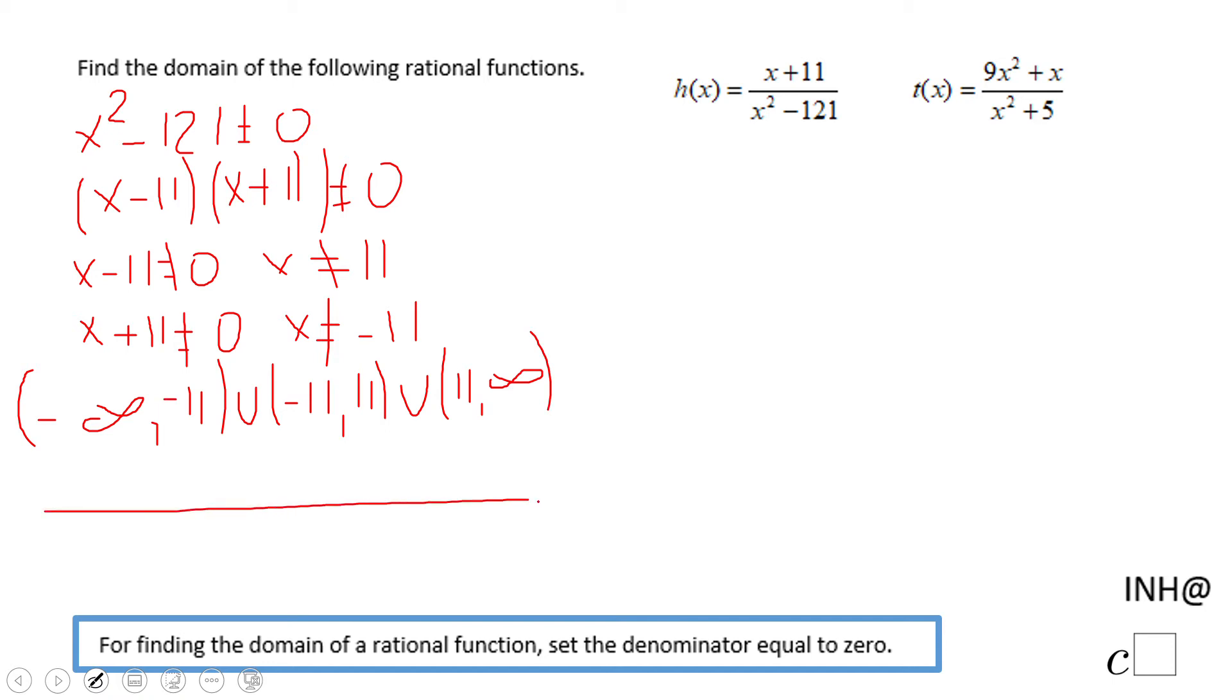And on the number line, and if you want to start with the number line, that's fine. We're going to have negative 11 here, positive 11 here, and then let's use a different color to show the domain, this part in between, and the right side. Okay, this is the domain for the first one, for h(x).